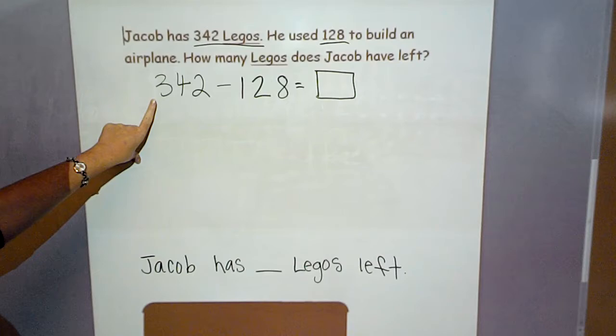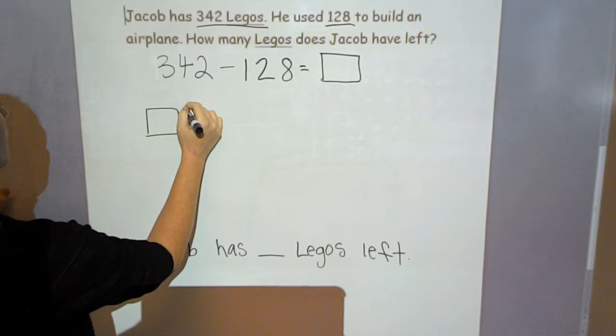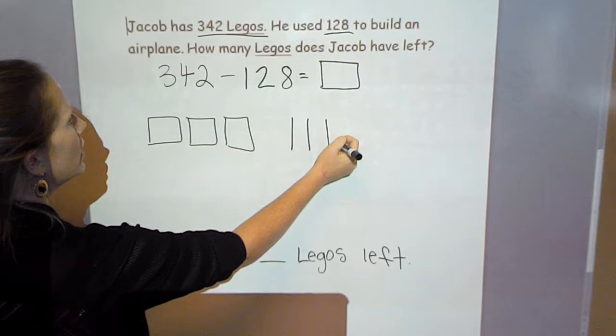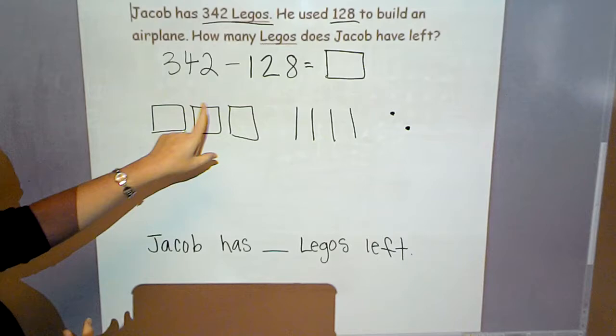So I've got to start by drawing my total, 342. I have three hundreds, four tens, 1, 2, 3, 4 tens, two ones, 1, 2. And Jacob used 128 Legos. So I'm going to take those Legos away from my total.